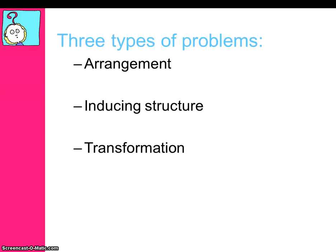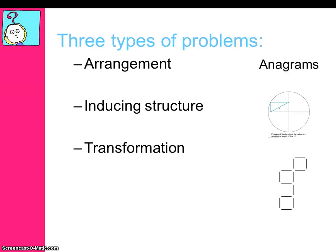Your book goes on to talk about how there are actually three types of problems: arrangement problems, those that deal with structure, and those that deal with transformation. Arrangement problems tend to be types of anagrams. Structure-type problems involve trying to understand and represent the structure of an item in different ways. Transformation problems start with an initial goal and an end goal, and you have to transform it in the middle in order to get there.